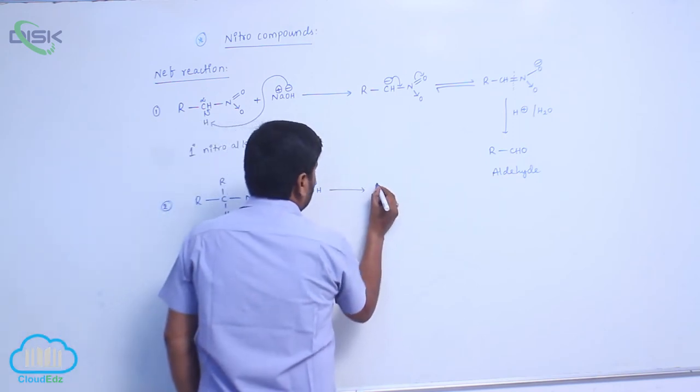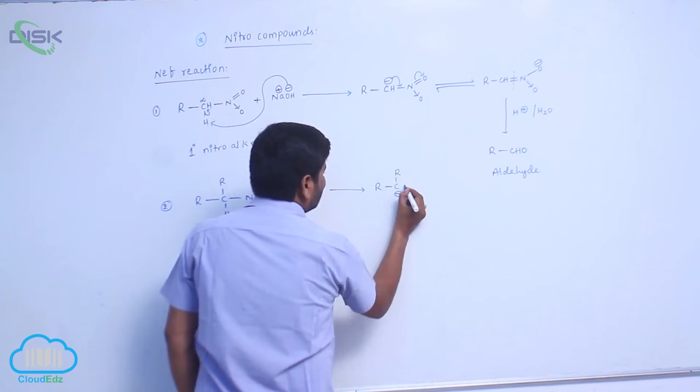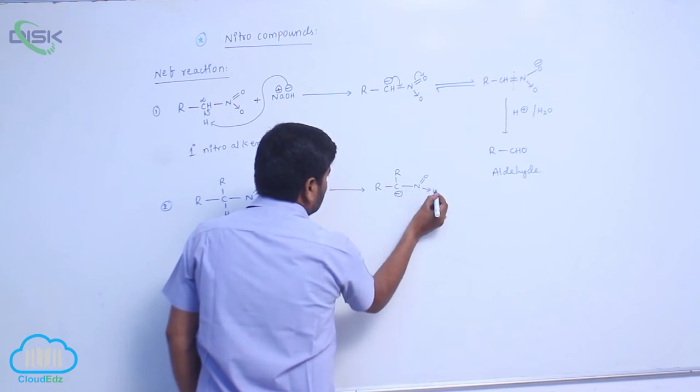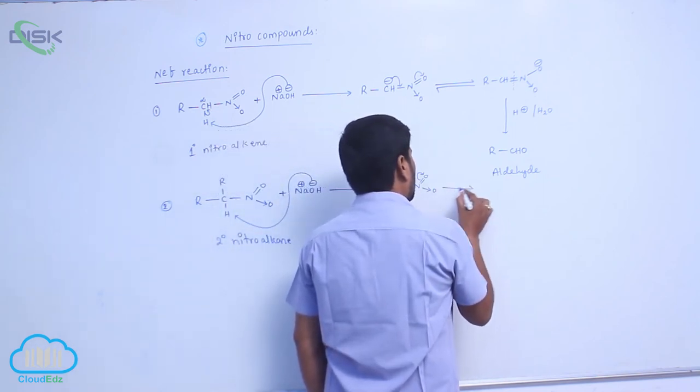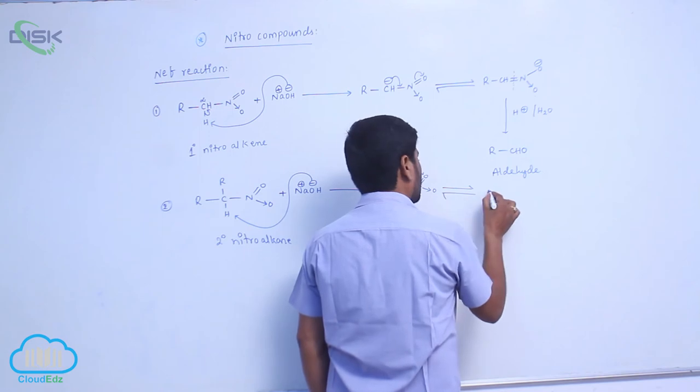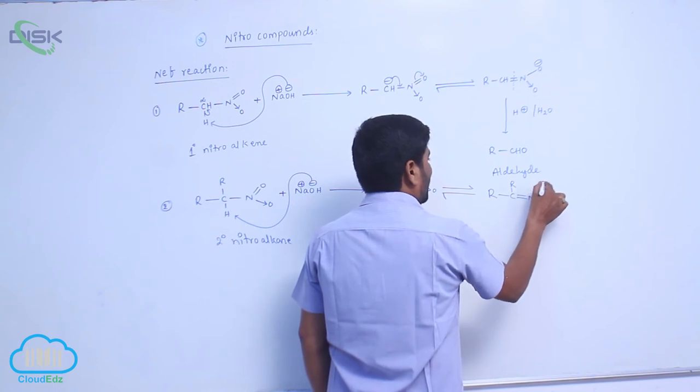This forms R2C- N=O with oxygen. Now it undergoes tautomerization with O-.